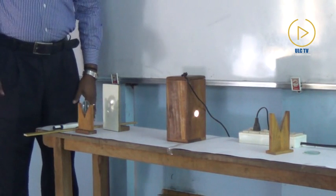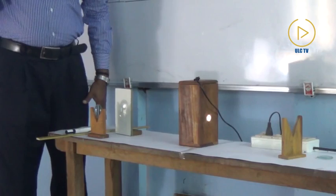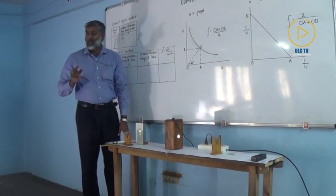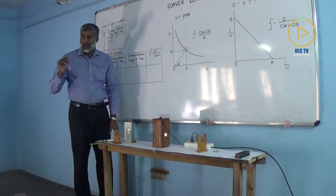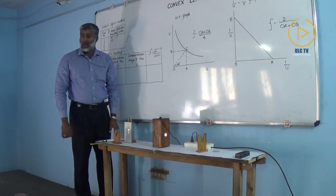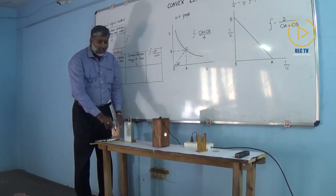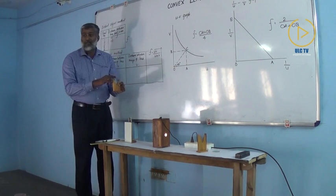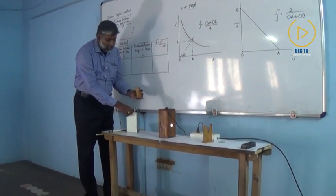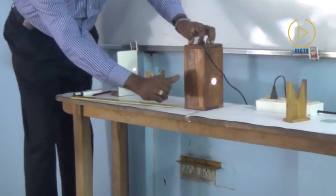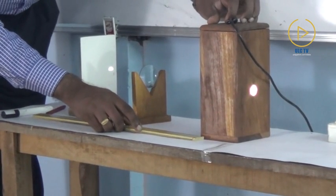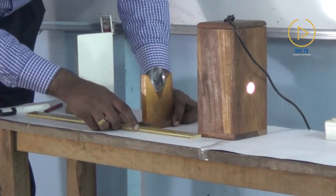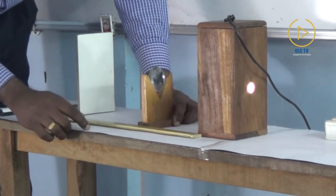The lens must be placed between 1.5F and 2.5F. Here the value of F obtained is 10 centimeter, so the lens must be placed between 1.5 times 10 and 2.5 times 10 — that is, between 15 to 25 centimeter. So the distance between object and lens must be 15 to 25. First I am placing the lens at a distance of 16 centimeter from the illuminated wire glass. The center of the lens must be at 16.